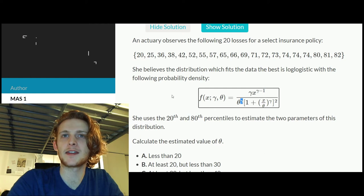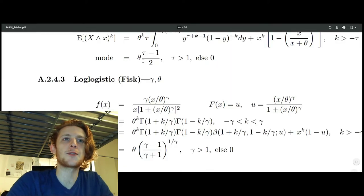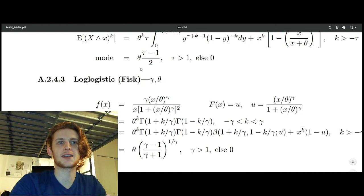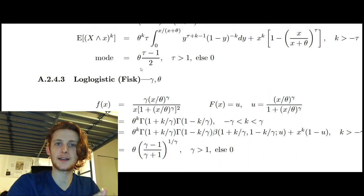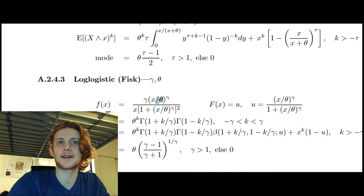If you were to go to the loglogistic in the formula sheet provided for the exam itself, the notation is actually different. So they do x divided by theta to the power of gamma, which is the same as theta to the negative one, which is theta to the one in the denominator.